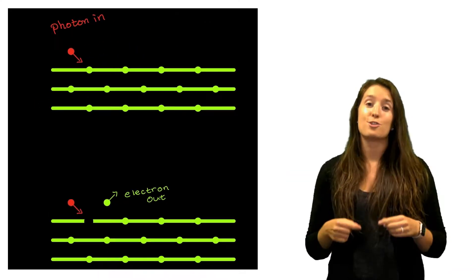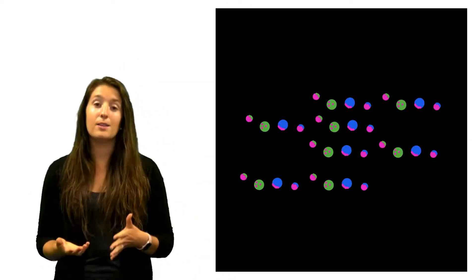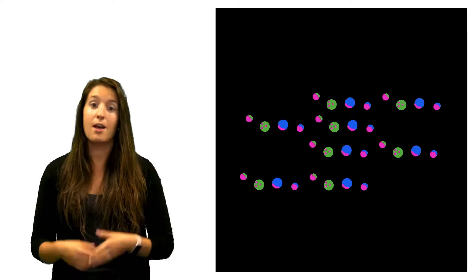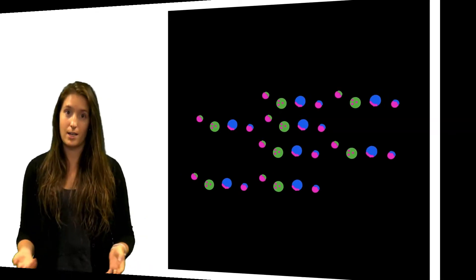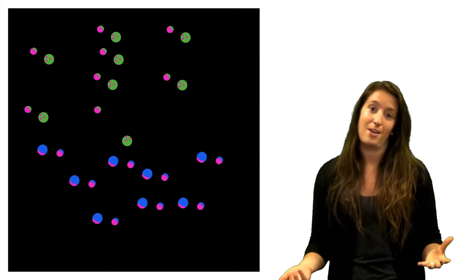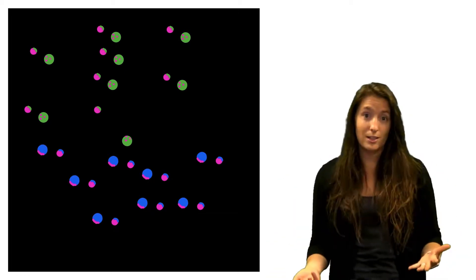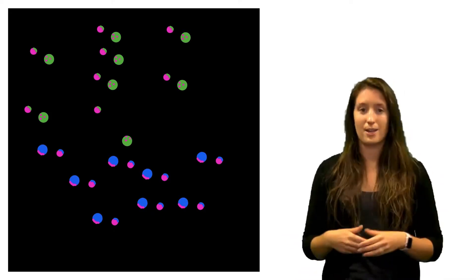Once the electron jumps off the surface, it is moving at a certain speed. Some electrons move faster than others. This speed is called velocity. When an electron is moving, it has lots of energy. This is called kinetic energy. The faster an electron is moving, the higher the kinetic energy.